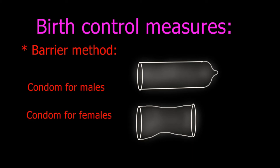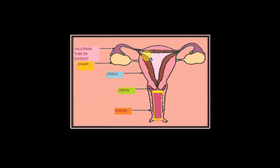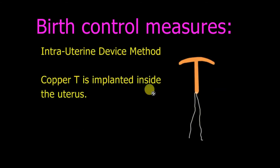Female condoms can be used inside the vaginal tract. Looking at the diagram of the female reproductive system, a diaphragm is temporarily fixed at the entrance of the vaginal tract. When the penis enters and semen is discharged, it remains at the diaphragm. After the sexual act, the diaphragm is removed along with the semen, preventing fertilization.